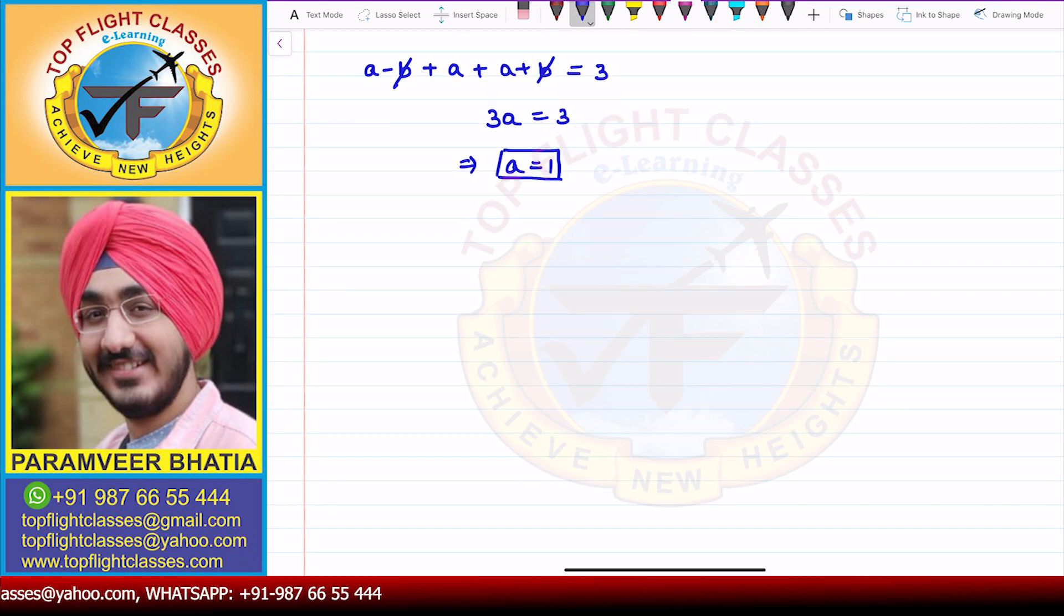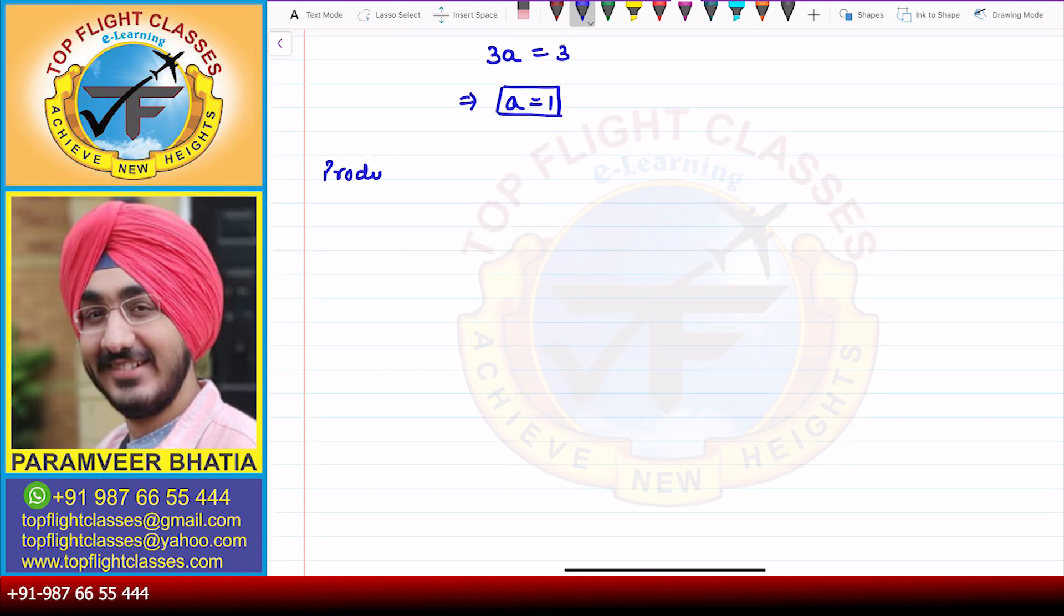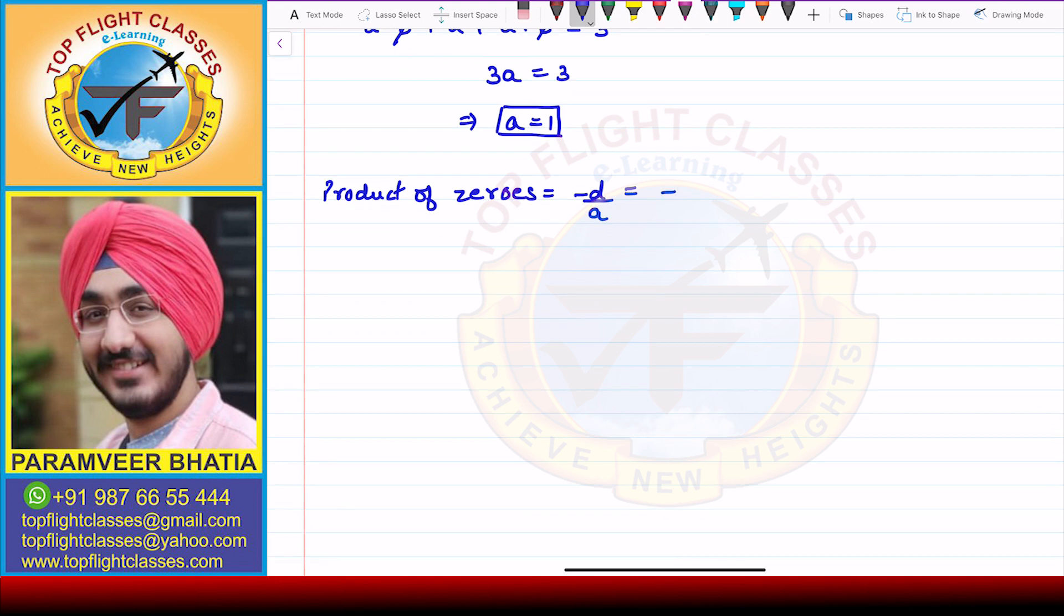Now the second thing we can take is the product of zeros, which is given by -d/a. In this case d = 1, so -1/1 = -1. The product of zeros is basically a × (a-b) × (a+b) = -1.